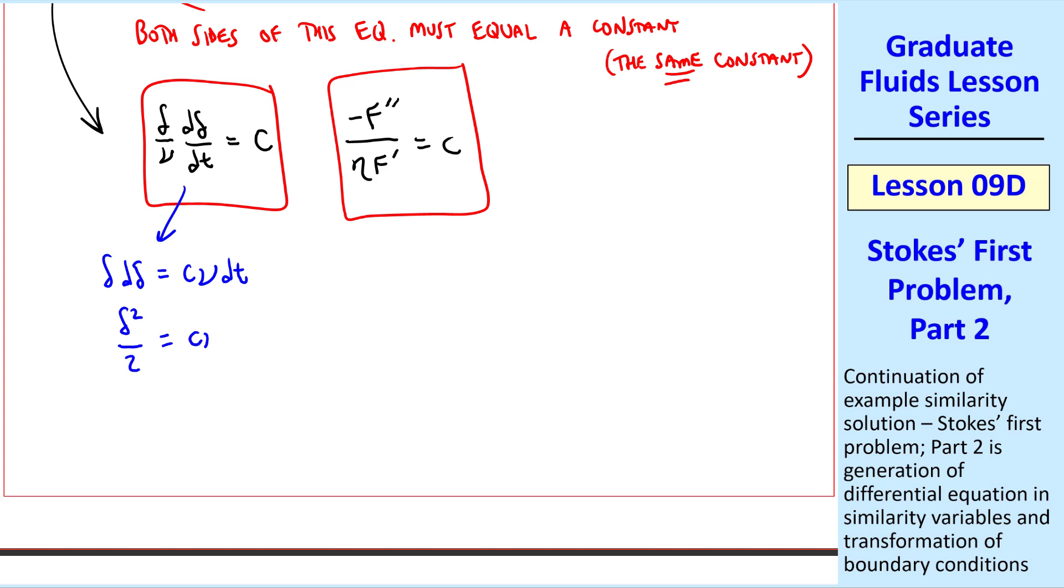δ²/2 equals cνt, plus some other constant I'll call b. But at t equals 0, delta must equal 0. Since nothing has happened yet, there's been no diffusion. Therefore, b must be 0.